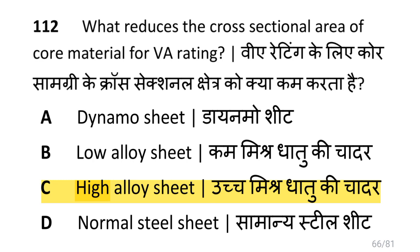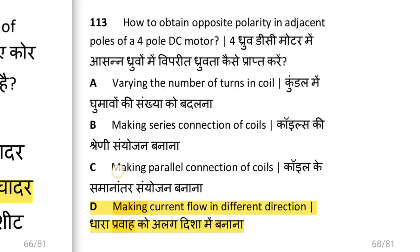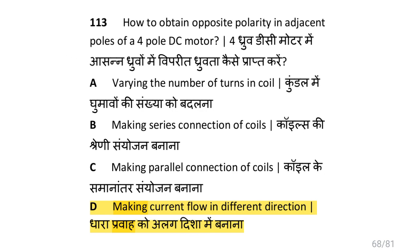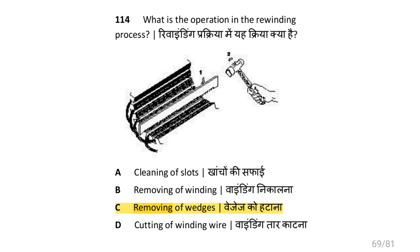What reduces the cross-sectional area of core material for VA rating? That is high alloy sheet. How is opposite polarity obtained in adjacent poles of a 4 pole DC motor? That is by making current flow in different directions. What is the operation performed in the rewinding process? That is removing of wedges.